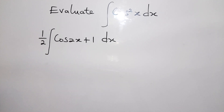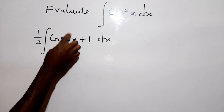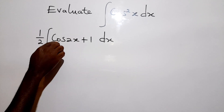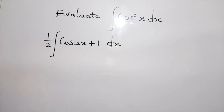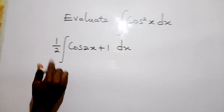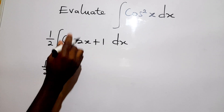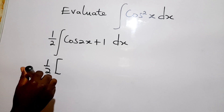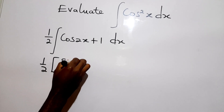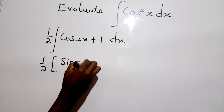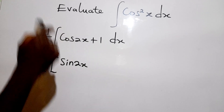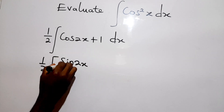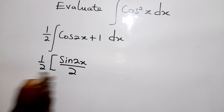Remember how to integrate trigonometric functions of this nature. When we integrate cos x we get sin x. So we say sin 2x — we repeat the angle and use the differential to divide. The differential of 2x is 2, so the integral of cos 2x gives sin 2x over 2.